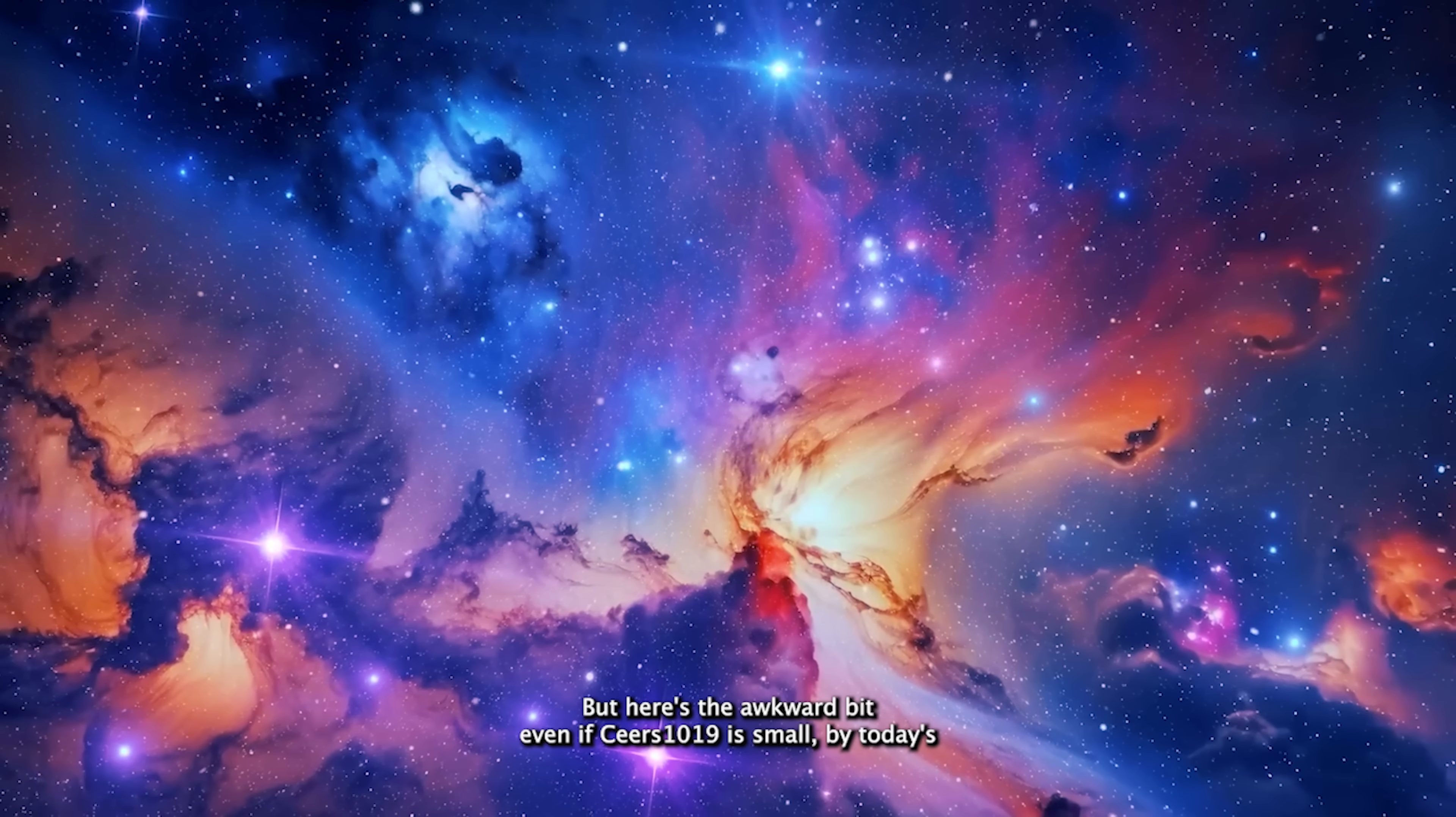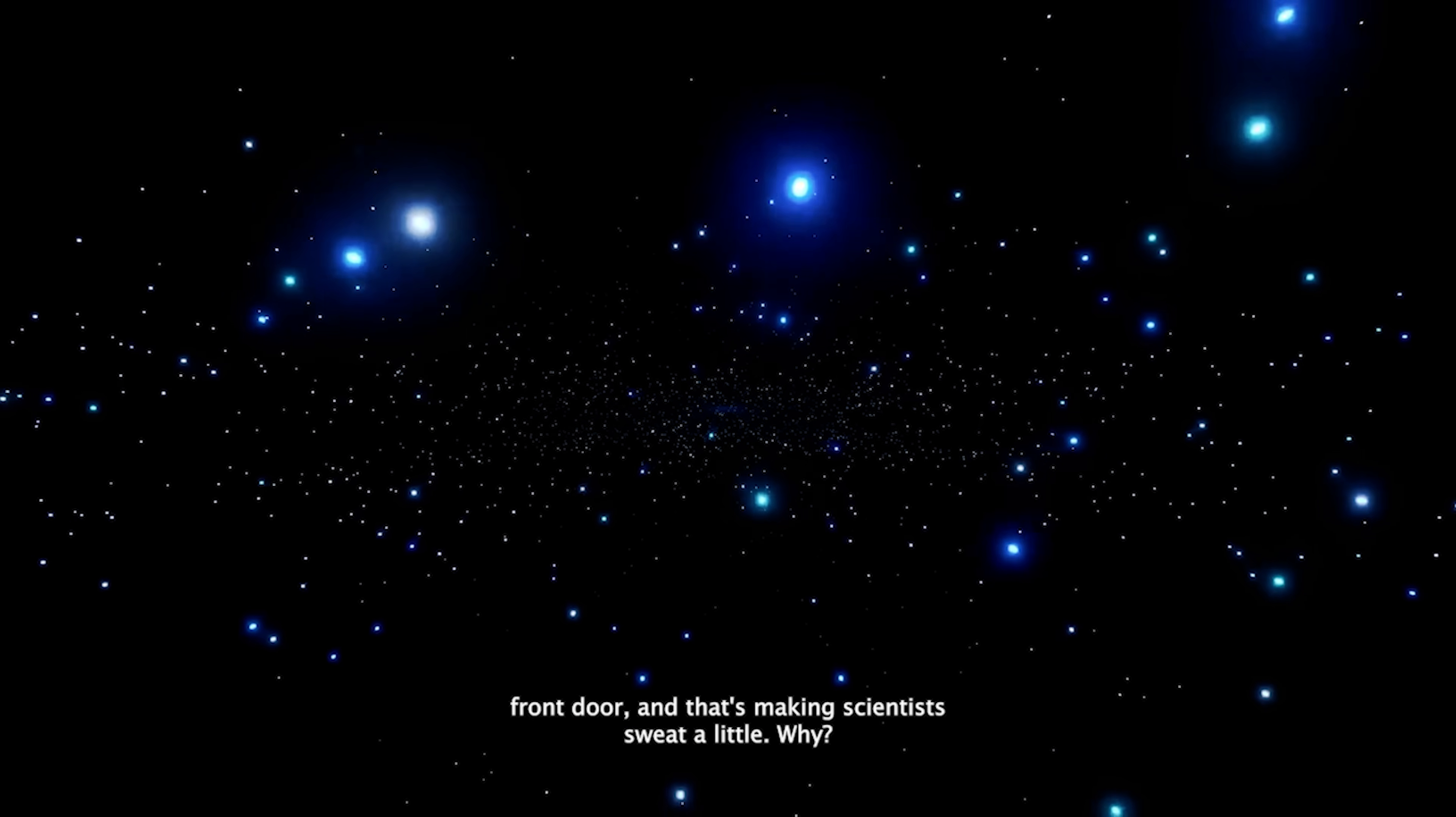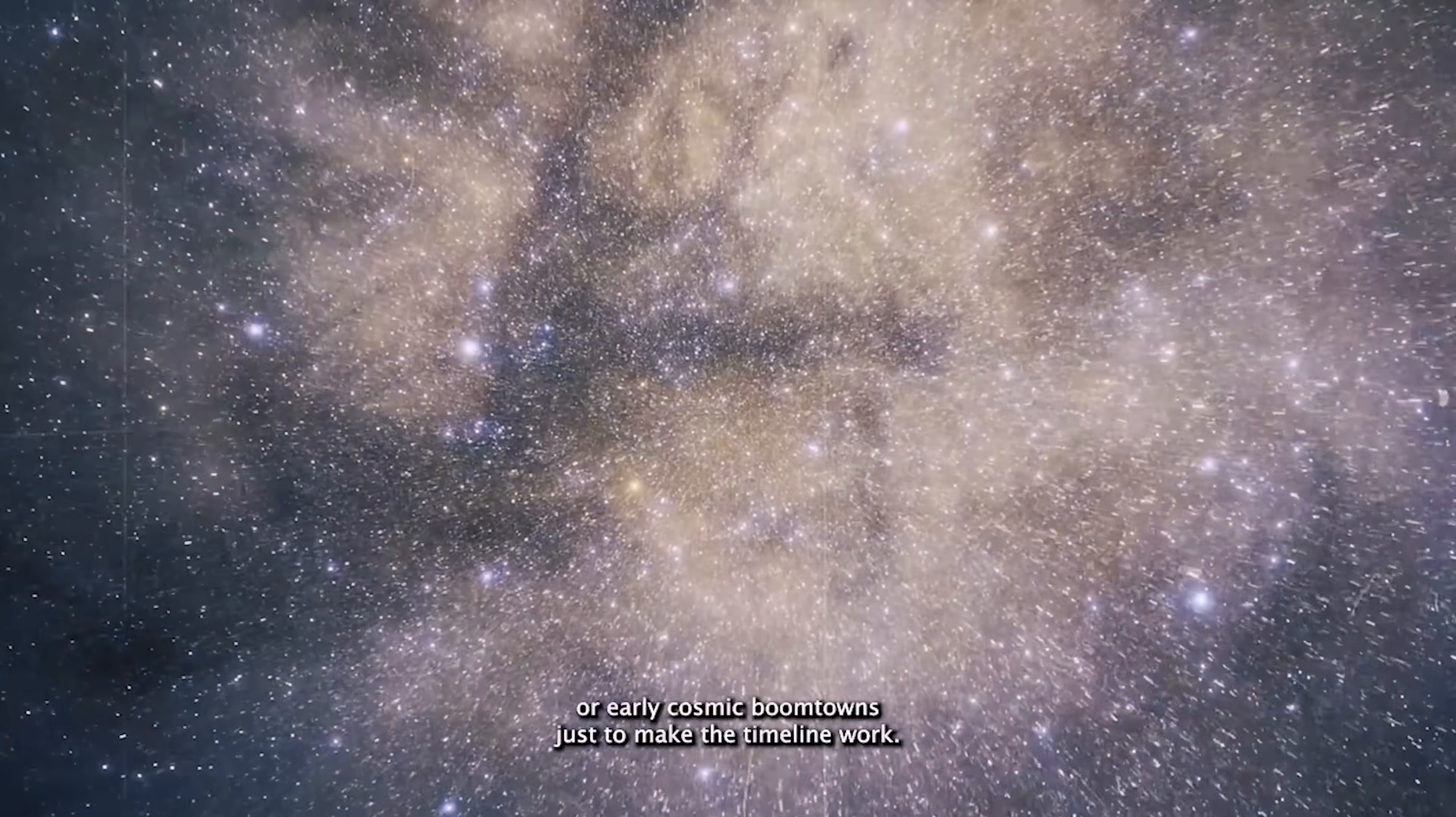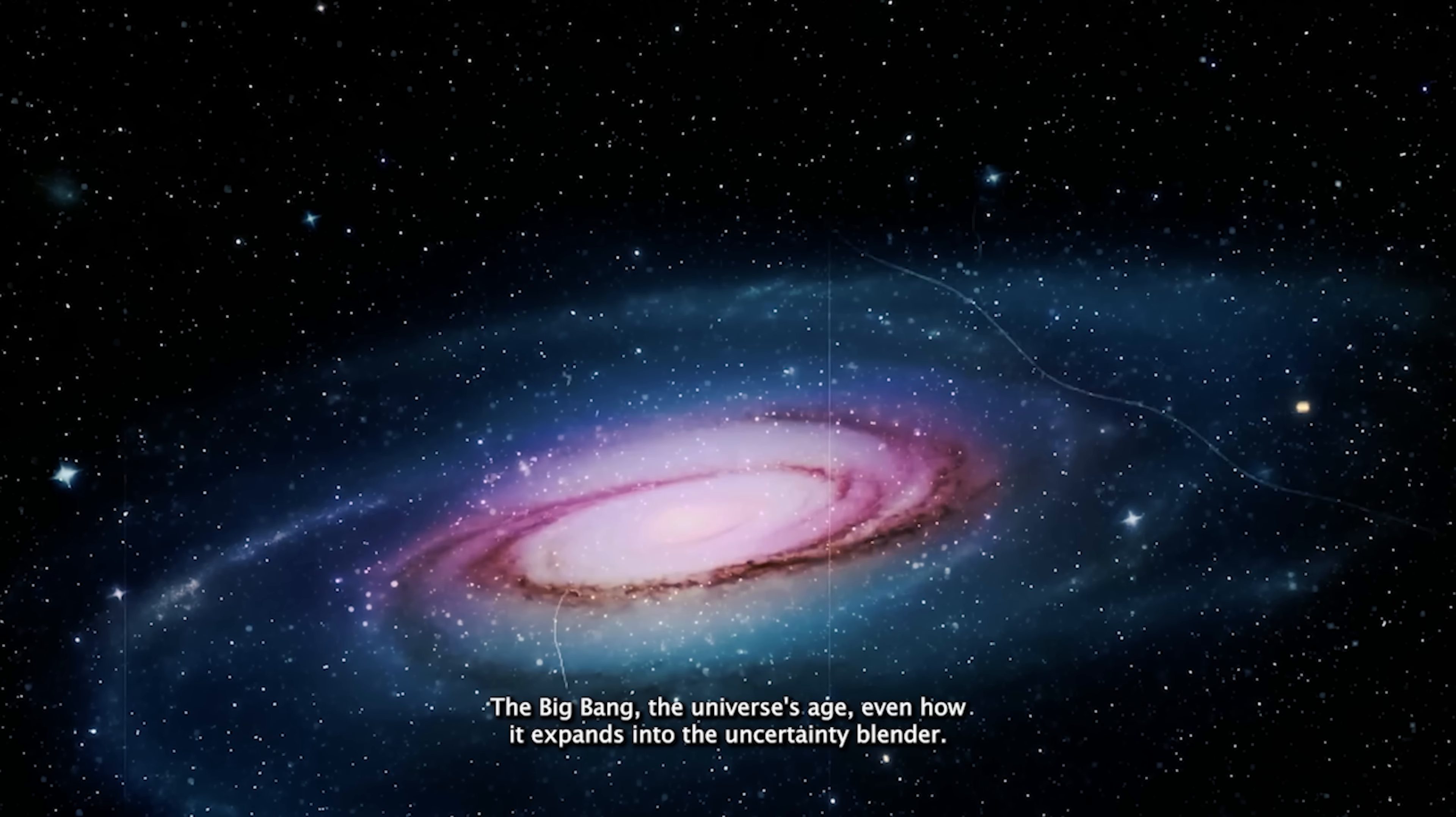But here's the awkward bit. Even if Sears 1019 is small by today's standards, it would have still needed hundreds of millions of years to form, along with its black hole pal. So if we do the math, its actual birth might be knocking right on the Big Bang's front door. And that's making scientists sweat a little. Because the more evidence we gather, the more it feels like we've been duct taping old theories to new data and hoping they stick. Some researchers are now floating ideas like turbocharged galaxy growth or early cosmic boom towns just to make the timeline work. But maybe, just maybe, our entire lambda CDM model, that gold standard theory of cosmology might be wrong. If that's true, it throws everything, the Big Bang, the universe's age, even how it expands into the uncertainty blender.